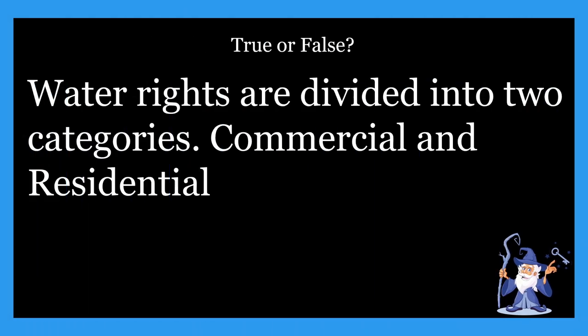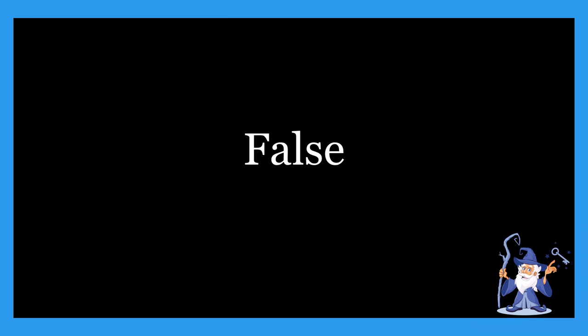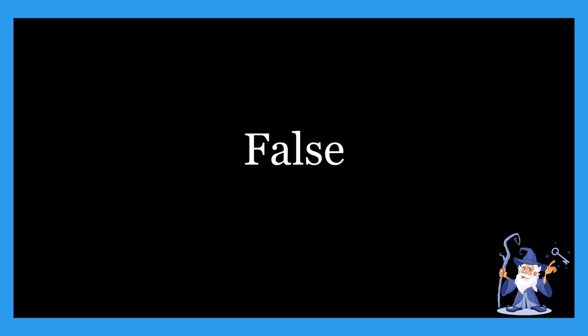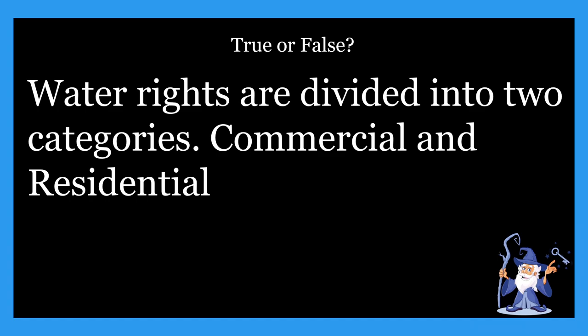Next one: water rights are divided into two categories, commercial and residential. Is that true or false? The right answer is false. The two categories for water rights are riparian and littoral — not commercial or residential. Riparian stands for one thing and littoral stands for something else, which we'll cover a little bit later.